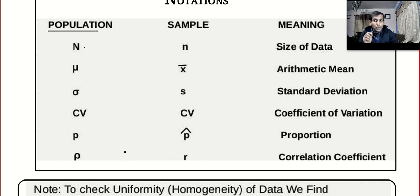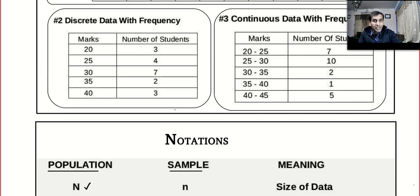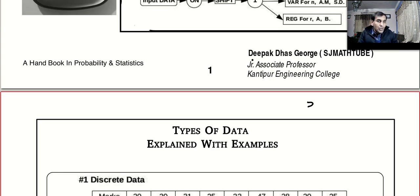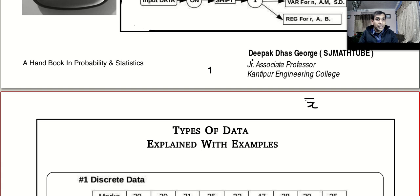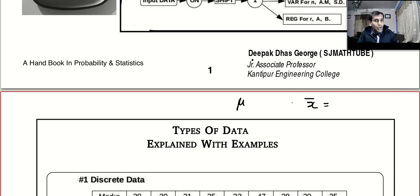This is very important — please note it down. If you are dealing with a population you must follow the population notations; if you are dealing with a sample you must follow sample notations. In your calculator they give you only x-bar, so whether you plug in population or sample data, the calculator will simply show x-bar. You have to use your discretion and decide whether to write mu or x-bar.